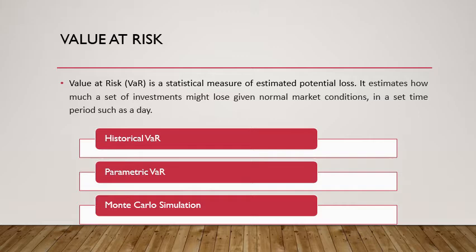Value at Risk estimates how much a set of investments will lose over a period of time at a given level of confidence. We are basically calculating the expected loss for a given confidence level over a period of time. The time period may vary — it could be one day, three days, five days, seven days, and so on. Typically VaR is calculated at the 99% level of confidence, but you can also calculate VaR at 95%, 68%, or 90% confidence.